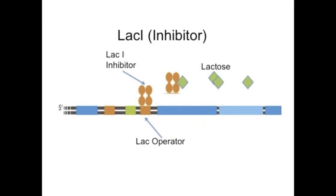The lacI inhibitor is a product of the lacI gene, and it binds to the lac operator. When it binds, it inhibits the RNA polymerase from making the genes for lacZ. However, in the presence of lactose, this inhibition is removed and RNA polymerase can bind.